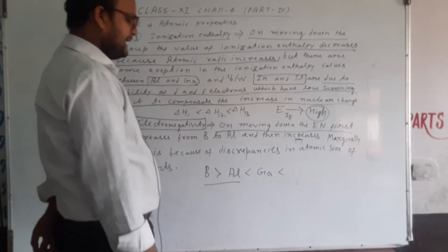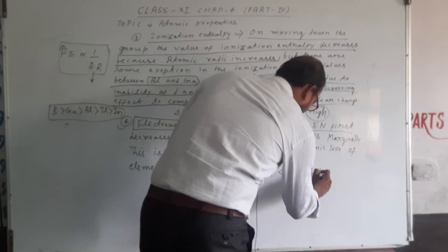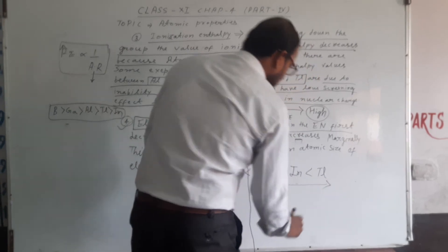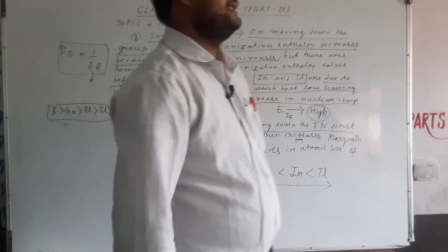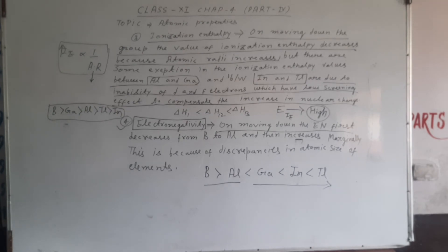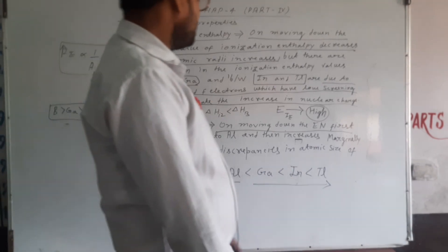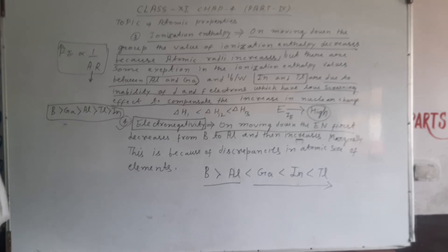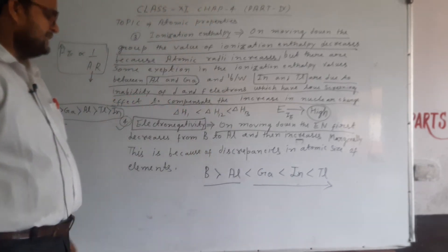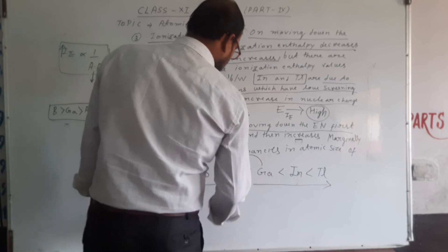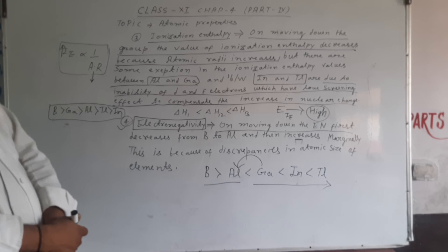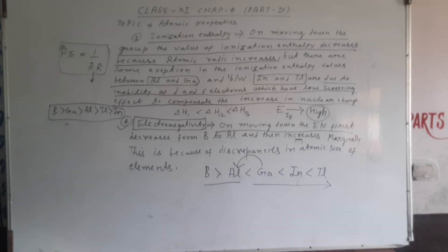So the electronegativity trend is: it decreases from Boron to Aluminium, then from Gallium through Indium to Thallium it starts to increase gradually. The reason is the discrepancy in atomic size — since Gallium has a smaller atomic size than Aluminium, there is a change in the trend of electronegativity. First it decreases from Boron to Aluminium, then increases from Gallium to Thallium. That covers all the atomic properties; now we move to physical properties.